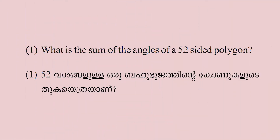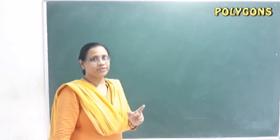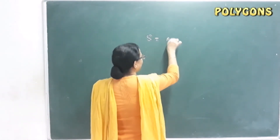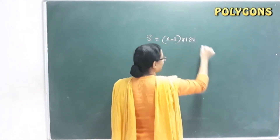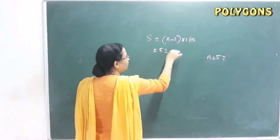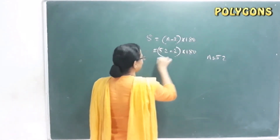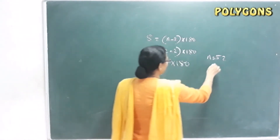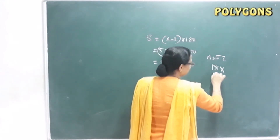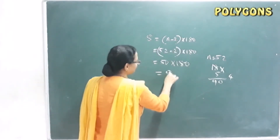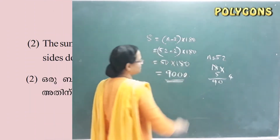Practice problem: What is the sum of the angles of a 52-sided polygon? Using the formula S = (N − 2) × 180, we get S = (52 − 2) × 180 = 50 × 180.